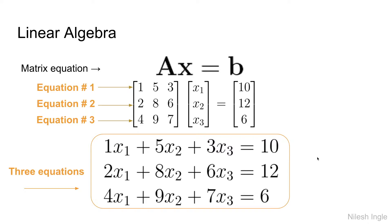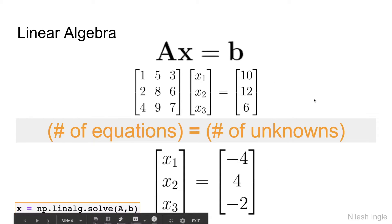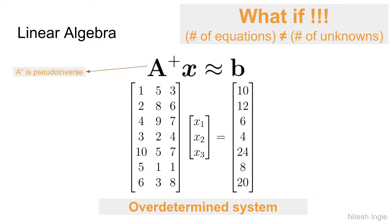When we have an equal number of equations and unknowns, we can use the standard equation to calculate x1, x2, and x3. The Python code for that uses the linear algebra library's dot-solve function. However, when the number of equations is not equal to the number of unknowns, it is represented using a pseudo-inverse of A, denoted with a plus sign.